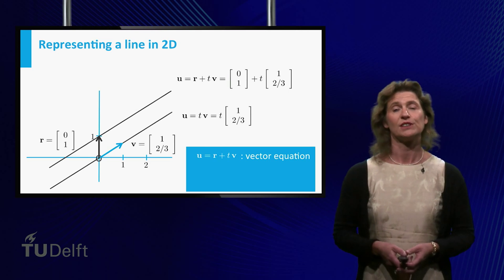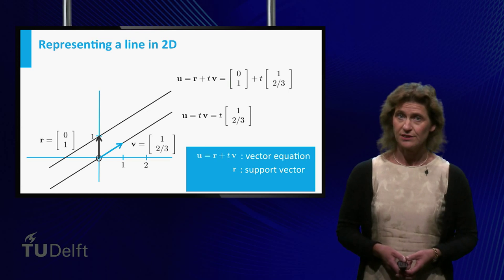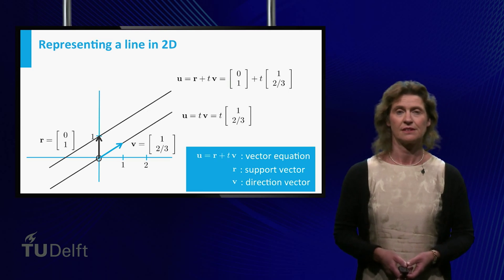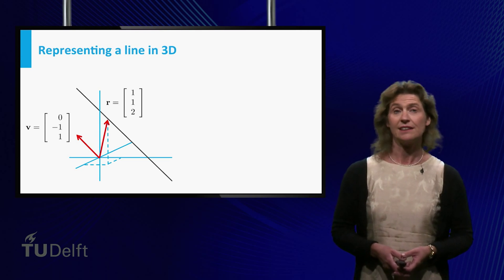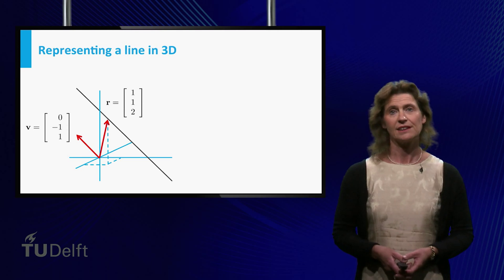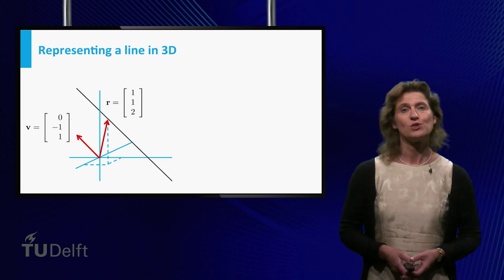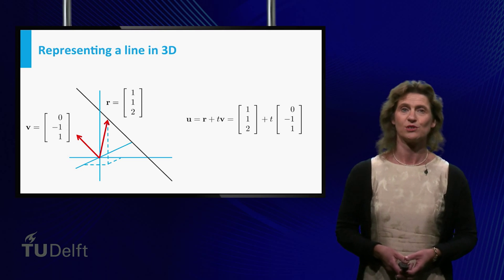This is called a vector equation of the line, and the vector r is called the support vector, and v is called the direction vector. In three-dimensional space you can follow exactly the same procedure. Taking the support vector and the direction vector from the picture, you see that the line has vector equation u equals r plus t times v.